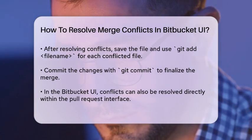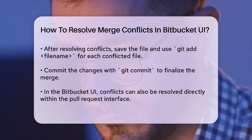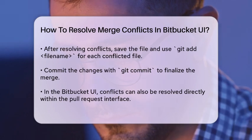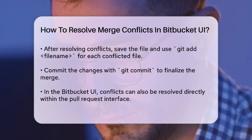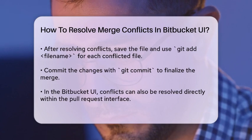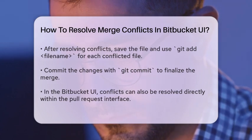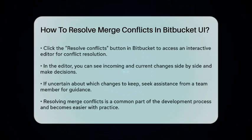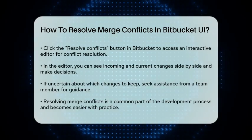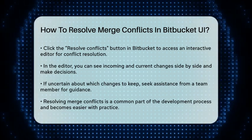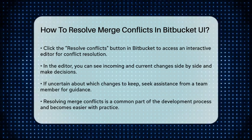If you're using the Bitbucket UI, you can also resolve conflicts directly there. When you create a pull request and Bitbucket detects a conflict, it will highlight the conflicted areas. You can click the resolve conflicts button, which opens an interactive editor where you can see the incoming and current changes side by side and make your decisions directly in the editor.